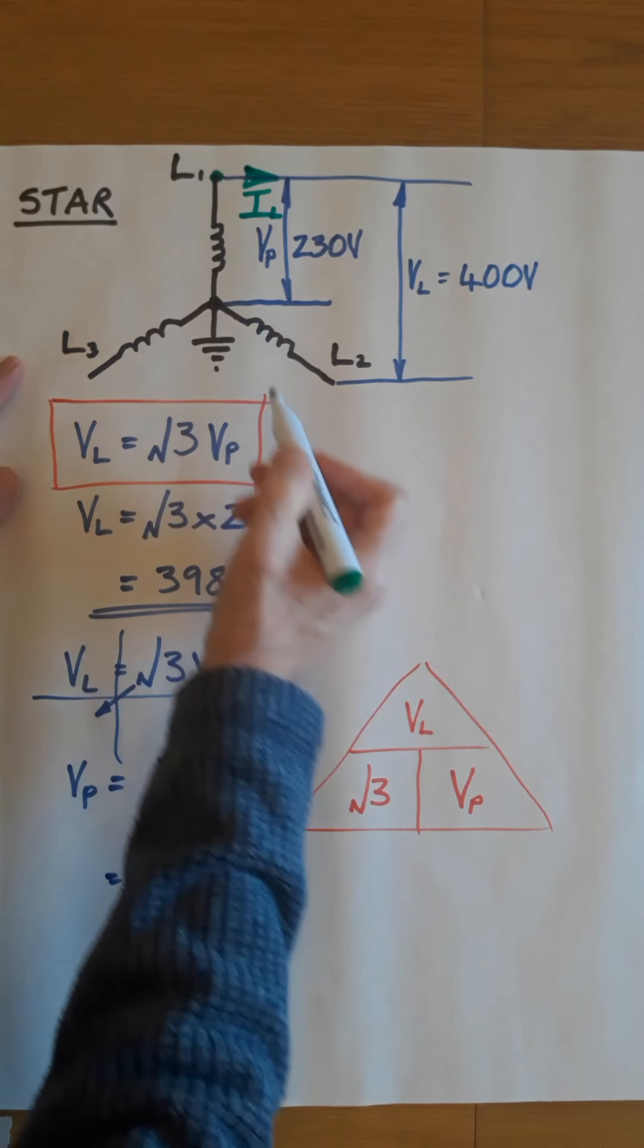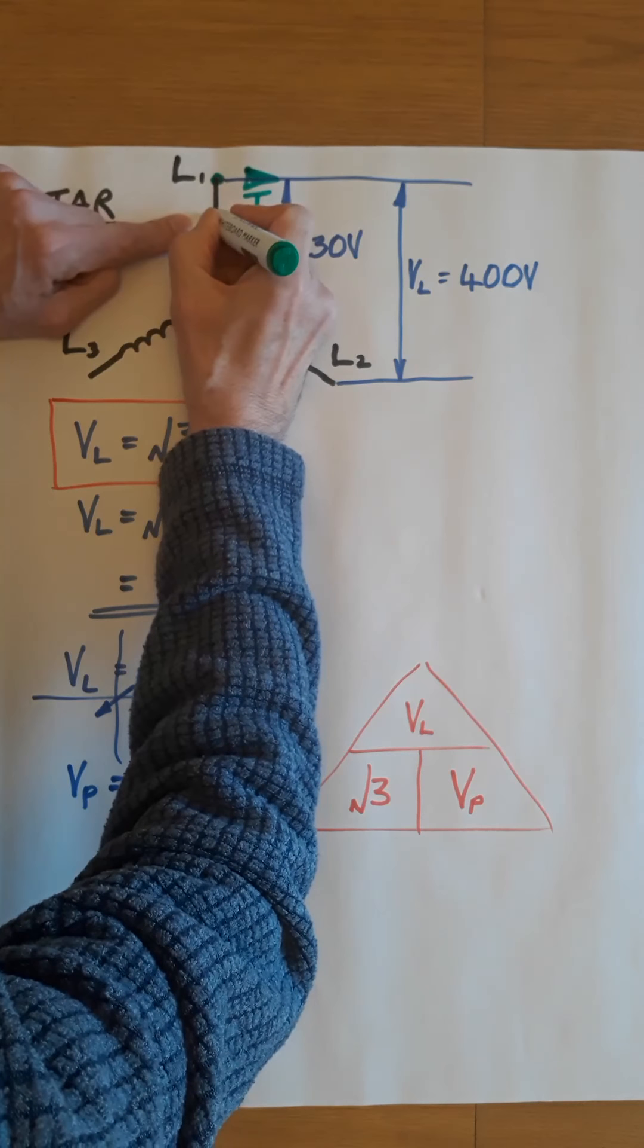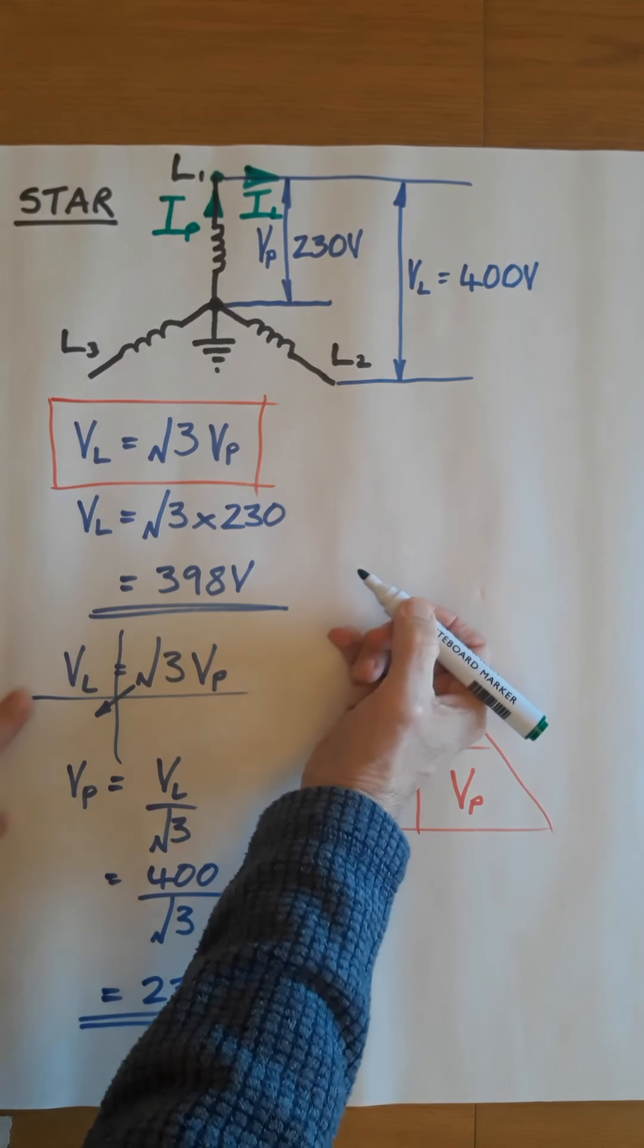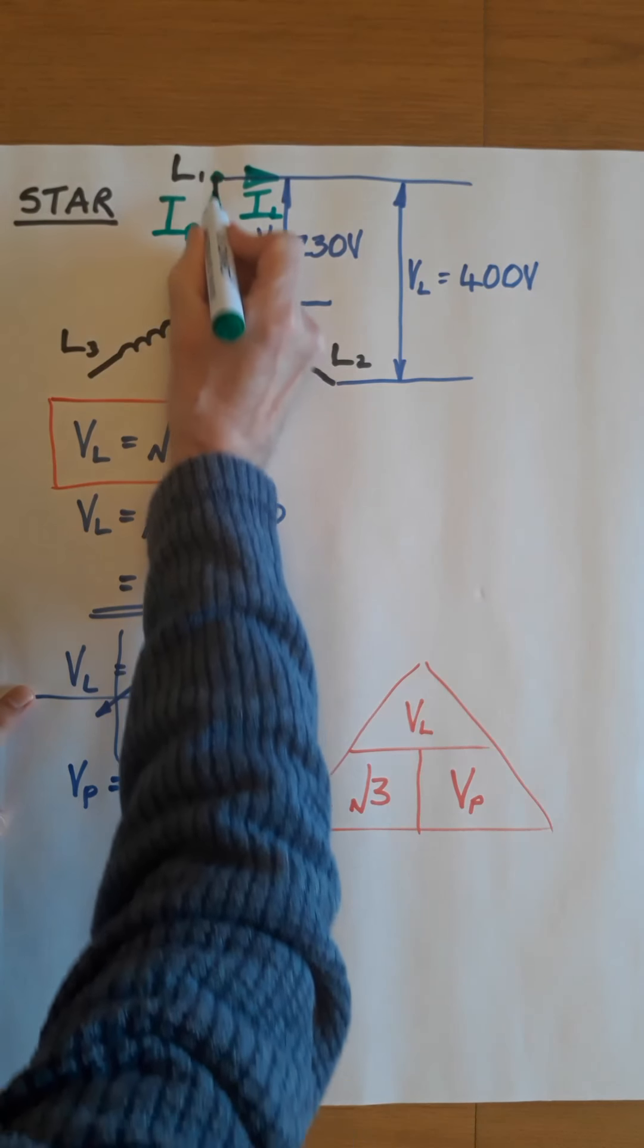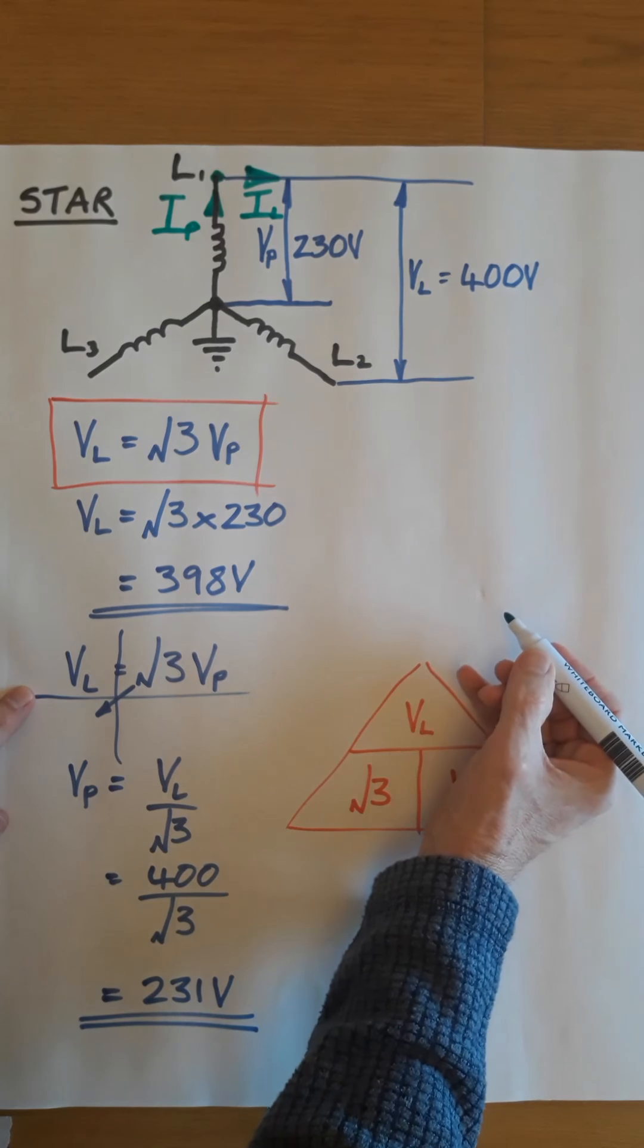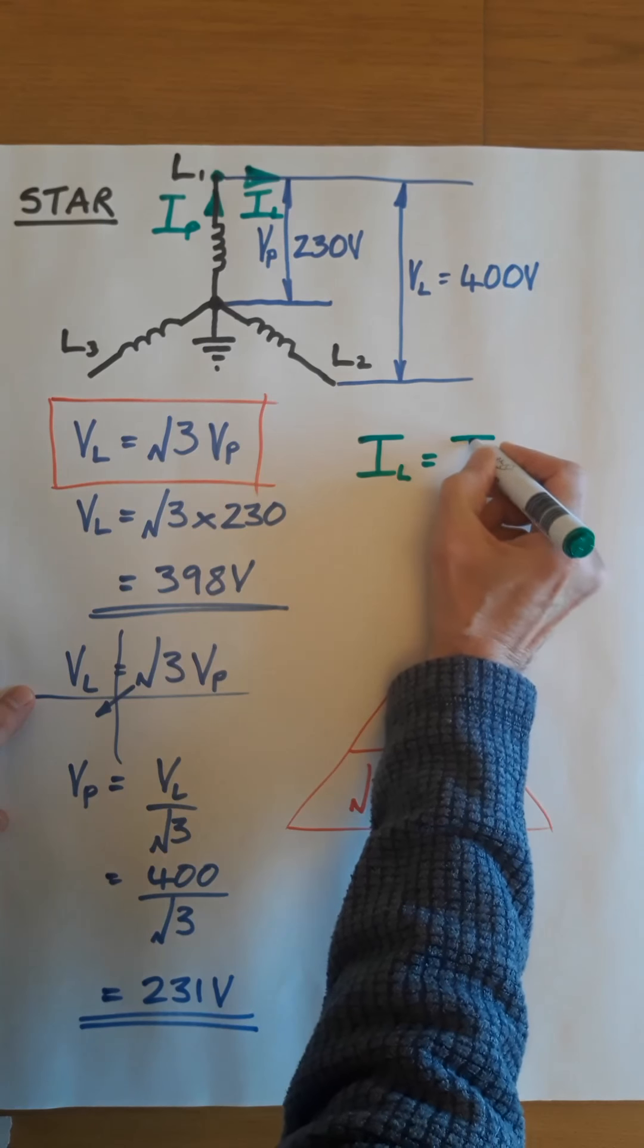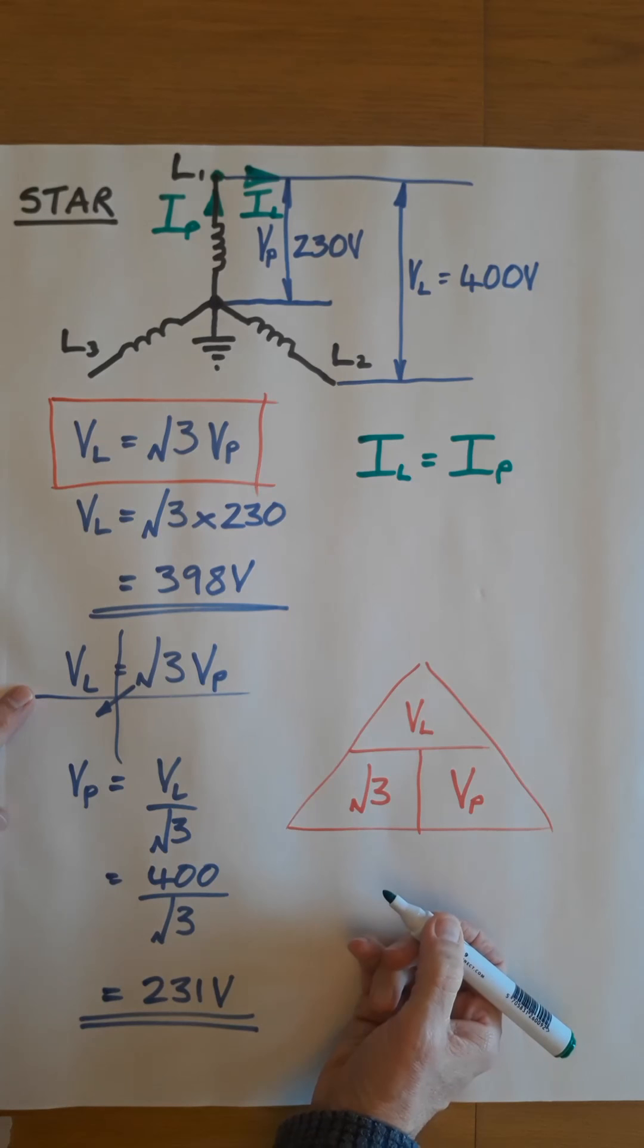And it's made up of the current that is coming out of just this coil here, so it's coming just out of one of the phases. That is the phase current. So if you look at this diagram, it clearly shows that the phase current becomes the line current; it's one and the same. So in a star system, IL equals IP. The currents are the same.